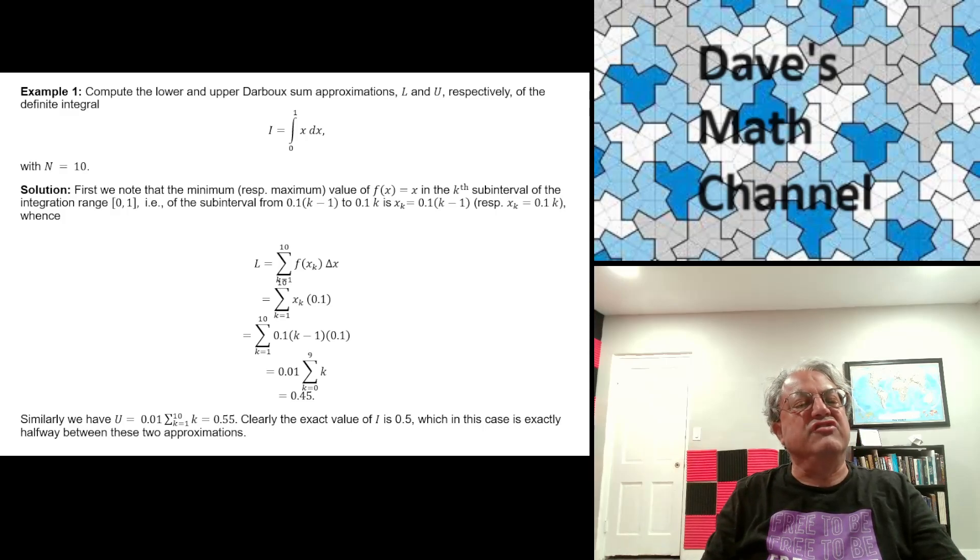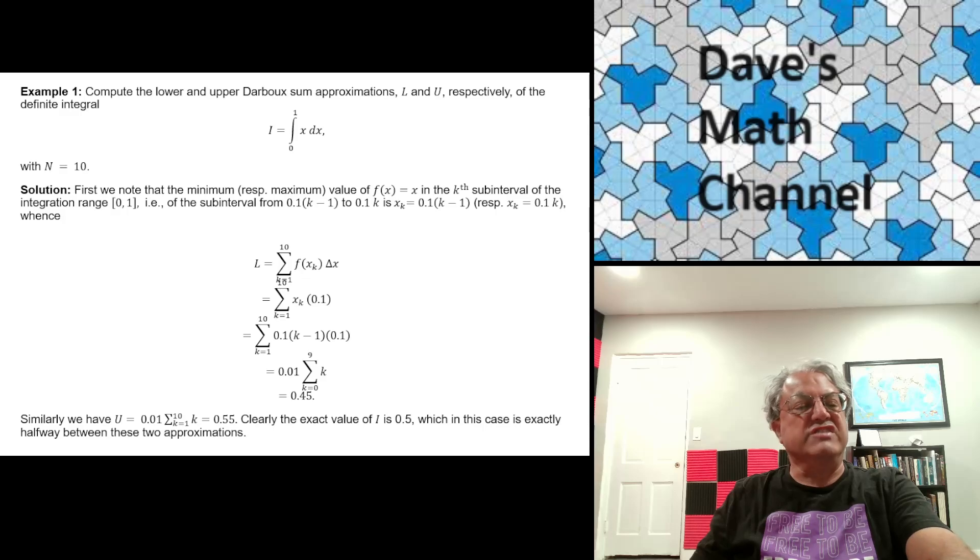Let's do L first. You're just summing from k equals 1 to 10, f of x sub k, but that's just x sub k. And I already said x sub k is 0.1 times k minus 1. Don't forget, you have to multiply each of these things by the width of your interval, which in this case is 1 tenth or 0.1, since there's 10 subintervals. And when you do all the math, what you end up with is 0.45. So that's a lower bound. And it's very obvious that the actual answer is 0.5. If you did the same thing to get the upper U, the upper Darboux approximation, you would find you get 0.55. And it's kind of interesting in this case, because the actual answer is exactly halfway between these two extremes, 0.5. It's usually not going to be exactly halfway, but it's always between the lower and upper bound. So anyway, that's an easy example.